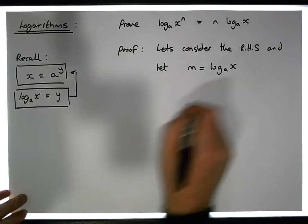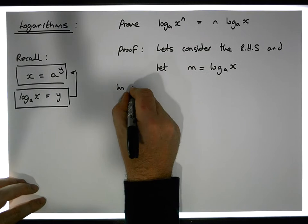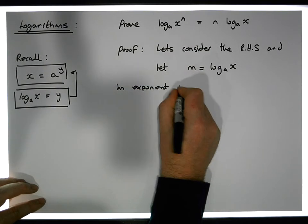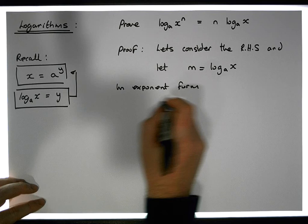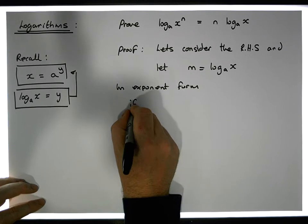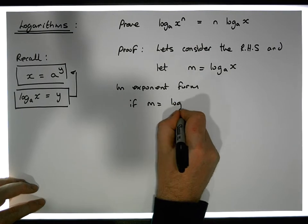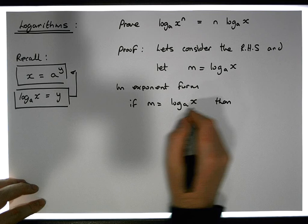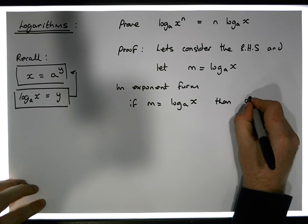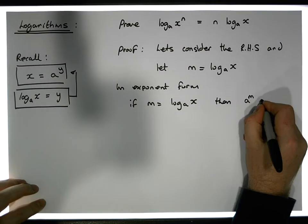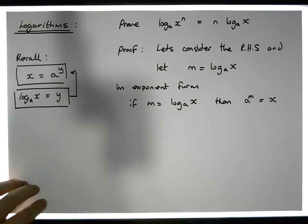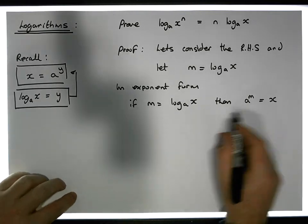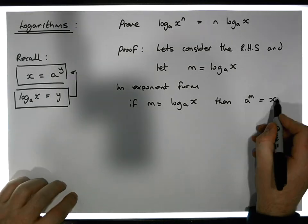What does this mean in exponent form? If m is equal to log of x to the base a, then what we're saying is that a to the power of m is equal to x.